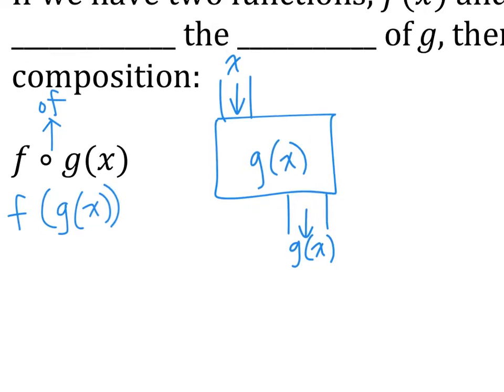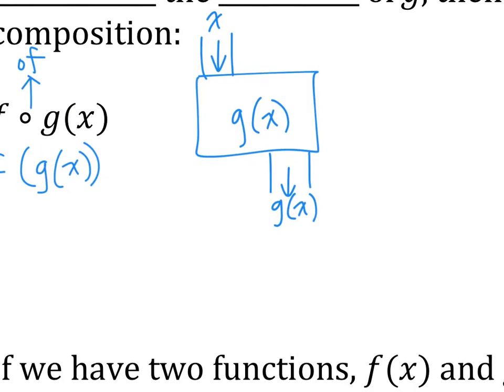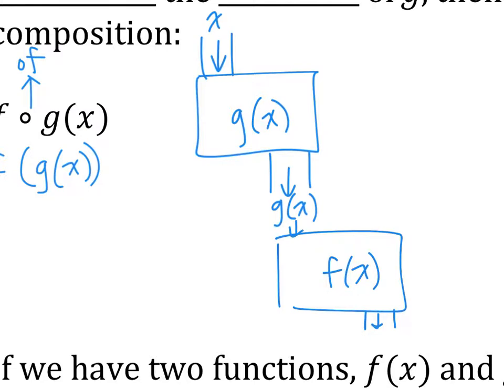g of x is now going to go into f. So it's like a two-step drop: x goes into g, comes out with g of x. g of x goes into f, comes out with f of g of x.